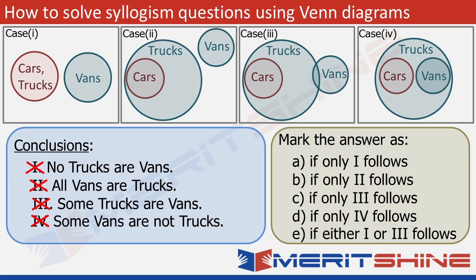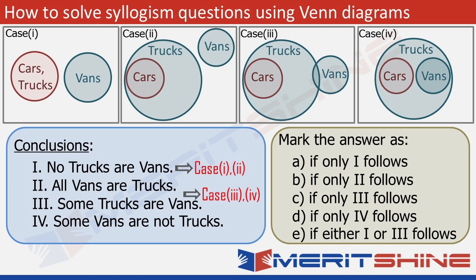Since options A, B, C, and D cannot be the answer, the answer has to be option E. Option E says: either conclusion 1 or conclusion 3 follows. Conclusion 1 — no trucks are vans — is valid in cases 1 and 2. Conclusion 3 — some trucks are vans — is valid in cases 3 and 4. Together, conclusions 1 and 3 cover all four possibilities. So we can say that either conclusion 1 or conclusion 3 must follow, making E the correct answer.